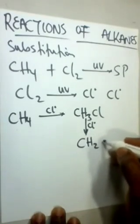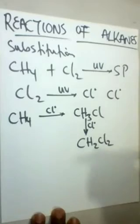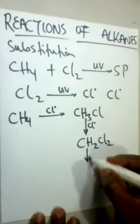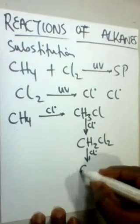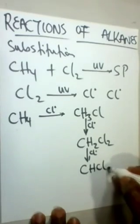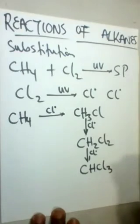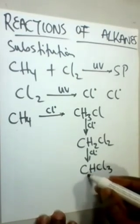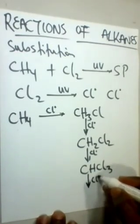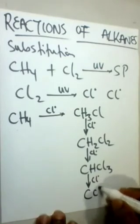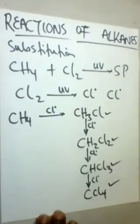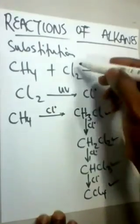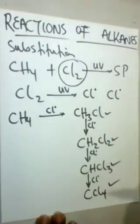We can also produce dichloromethane. This reaction can continue to produce trichloromethane. Also, we can produce tetrachloromethane. These are the various substituted products of the chlorination of methane. The presence of UV light is necessary.